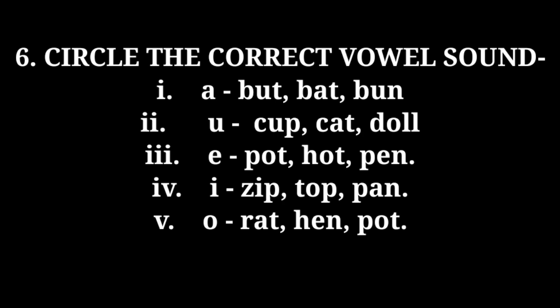Second one: cup, cat, doll — find the correct answer and circle it. Number three, letter E: pot, hot, pen. Number four, letter I: zip, top, pan. And the last one, letter O: rat, hen, pot. Pause each page and complete the work.